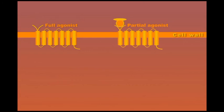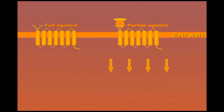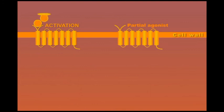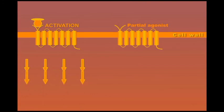Remember that when the receptor is empty, the partial agonist produces a better-than-nothing effect. However, if the receptor is occupied by a full agonist, the partial agonist works as a competitive antagonist and lessens the biological effects of the full agonist.